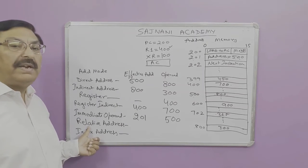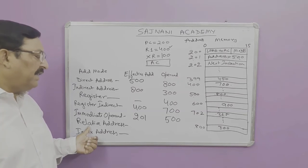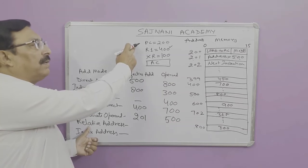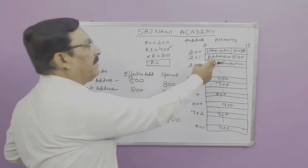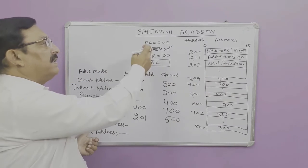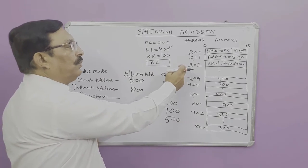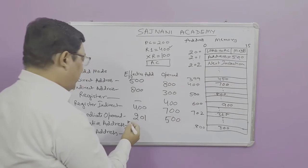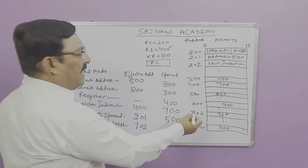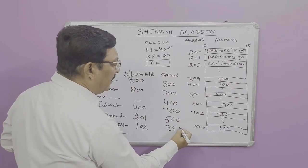To correct this: in relative addressing, the effective address is calculated by adding the content of the program counter with the address mentioned in the instruction. At this point, the PC contains 202, so 202 plus 500 equals 702. This is the effective address, and at address 702 the value is 325, which is the operand.